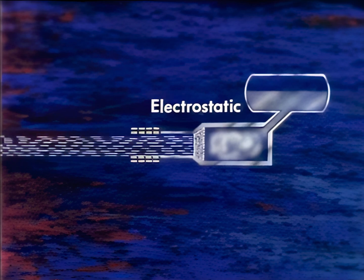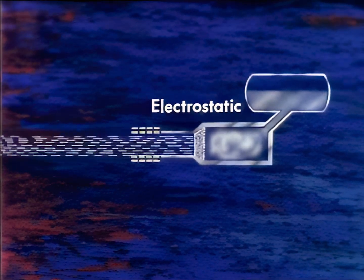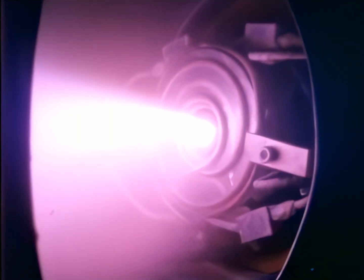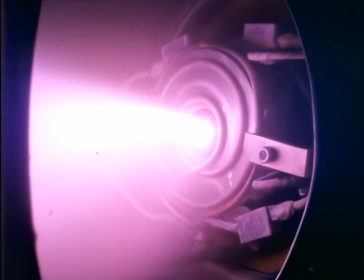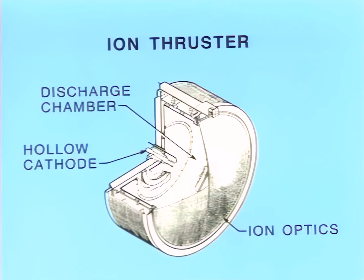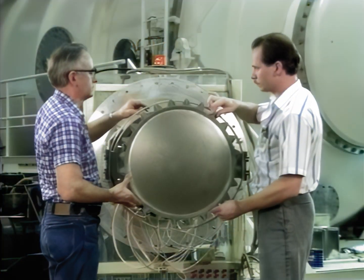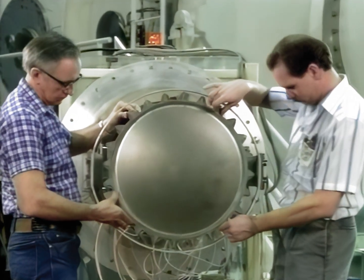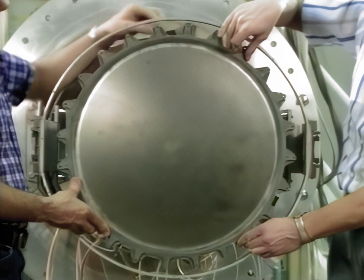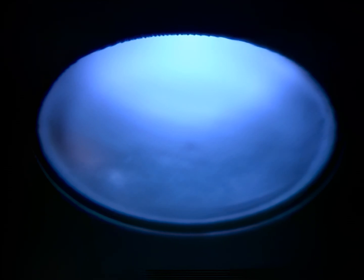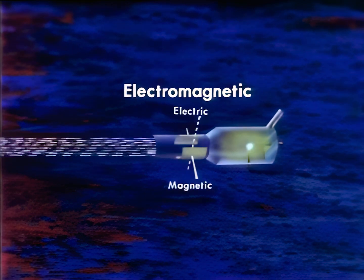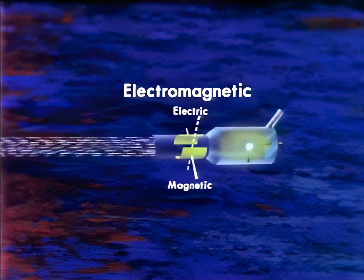Electrostatic or ion thrusters and magnetoplasmadynamic, or MPD, rockets are being developed for Earth orbit and planetary primary propulsion functions. Ion rockets first emit electrons from a cathode to create positively charged ions in a discharge chamber, and then electrostatically accelerate those ions through two perforated plates called ion optics. This is a typical discharge chamber along with ion optics, which contain over 20,000 holes to accelerate the ions. This scene shows an ion thruster operating at approximately 10 kilowatts. MPD rockets produce thrust by using an electromagnetic field to accelerate a plasma.